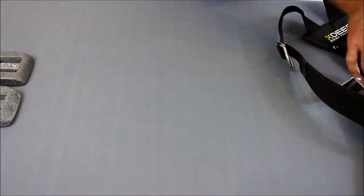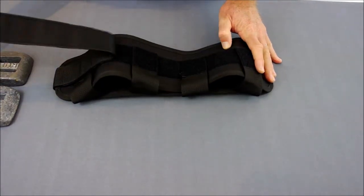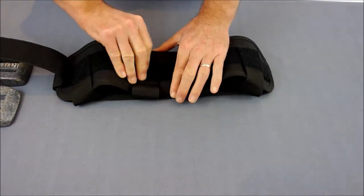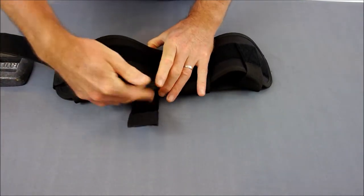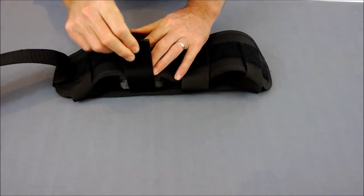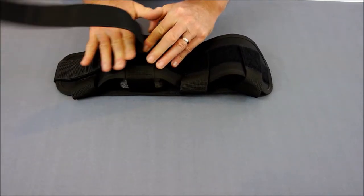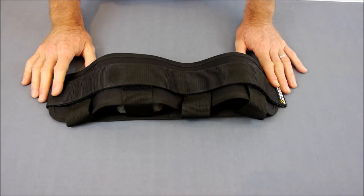Looking at the larger weight pocket now, same process, larger tab. In this case, two weights can be stacked on top of each other. Close up again, and everything holds securely.